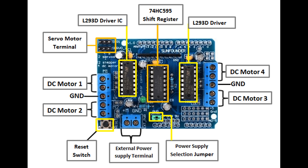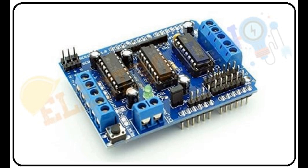Flyback diodes protect the motor driver circuit from voltage spikes, which can occur when the motor suddenly stops or changes direction. These spikes, known as back EMF, are produced by the inductive nature of motors. Flyback diodes help dissipate this energy, preventing potential damage to the transistors and control circuitry. An H-bridge is a configuration of four transistors arranged to control the direction of current flow through the motor, enabling forward and reverse rotation. By activating different combinations of these transistors, the H-bridge can control the direction and stopping of the motor, making it ideal for bidirectional control in DC motors.